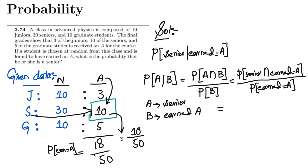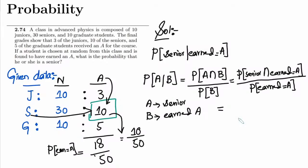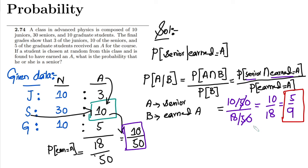Now putting in the values: senior and earned A is 10 divided by 50, divided by the probability that he earned A, which is 18 divided by 50. The 50s cancel out, and at the end we get 10 divided by 18, or 5 divided by 9. That is the solution.